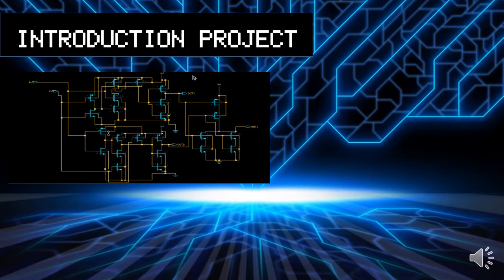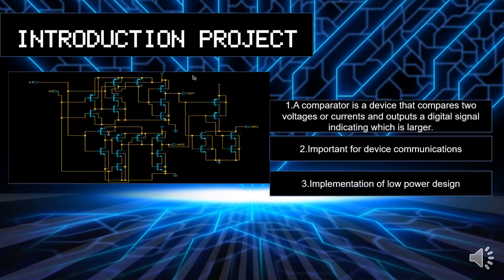Introduction of the project. A comparator is a device that compares two voltages or currents and outputs a digital signal indicating which is larger. It is important for device communication because a fast comparator that compares two voltages will enable better device communication and will transport messages more quickly. Third, we are focusing on implementing low power design in this project, because low power design has very high demand on the market.